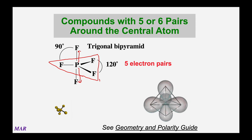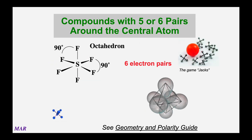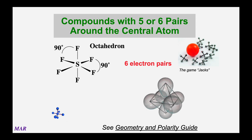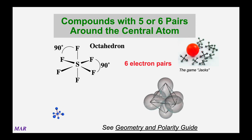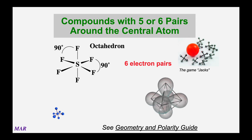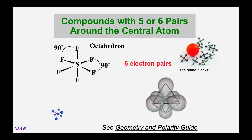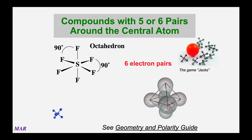When it comes to bond angles in the trigonal bipyramid, you've got 90-degree angles between the top atom and ones in the triangular plane, 120-degree angles among those in the plane, and 180 degrees top versus bottom. With six pieces around a central atom, you go to what's called an octahedron. All of these angles are 90 degrees, with the exception of directly across from each other, which would be 180 degrees. Five pieces — trigonal bipyramid; six pieces — octahedral.